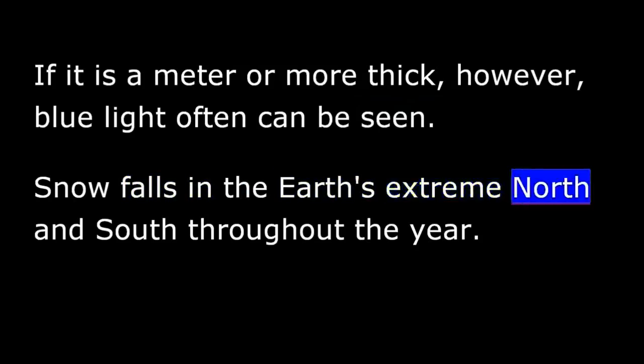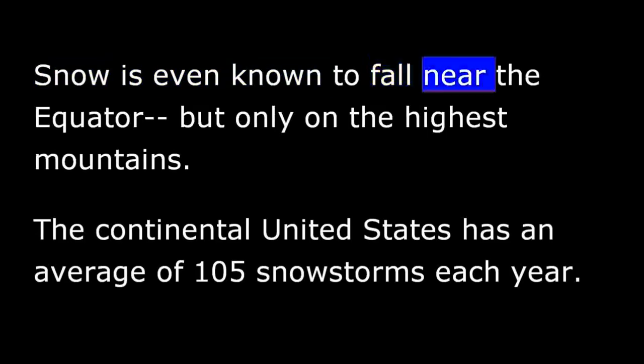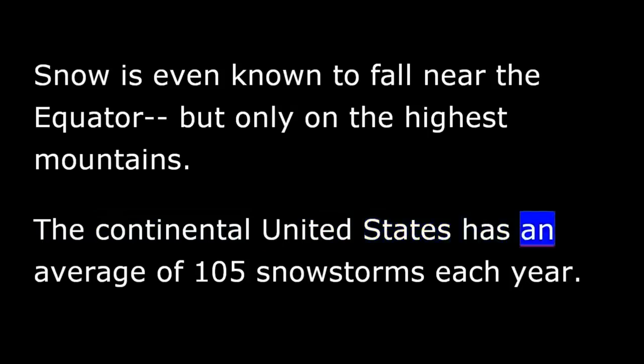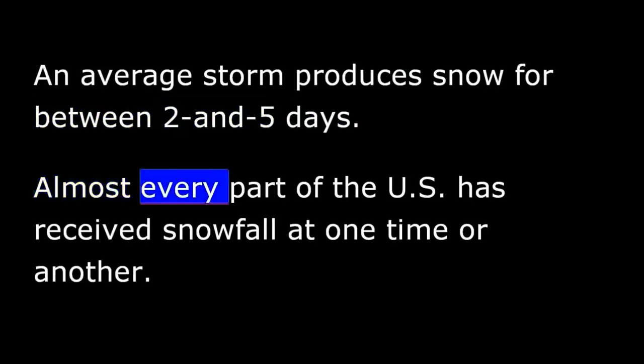Snow falls in the Earth's extreme north and south throughout the year. However, the heaviest snowfalls have been reported in the mountains of other areas during winter. These areas include the Alps in Italy and Switzerland, the coastal mountains of Western Canada, and the Sierra Nevada and Rocky Mountains in the United States. Snow is even known to fall near the equator, but only on the highest mountains. The continental United States has an average of 105 snowstorms each year. An average storm produces snow for between two and five days. Almost every part of the U.S. has received snowfall at one time or another. Even parts of southern Florida have reported a few snowflakes.